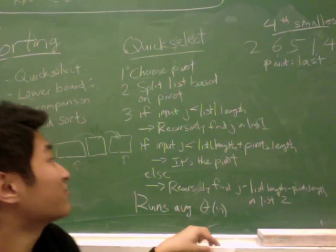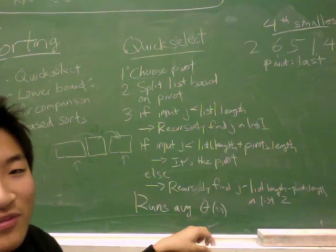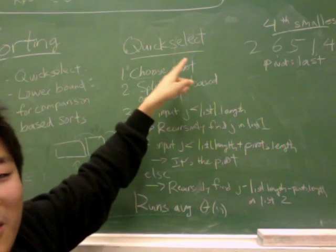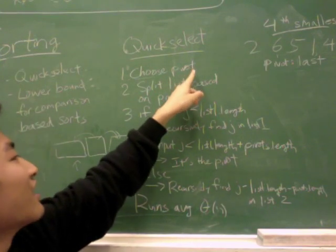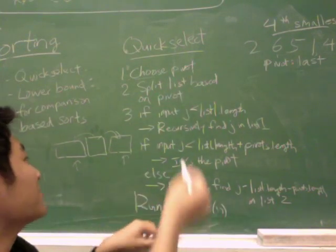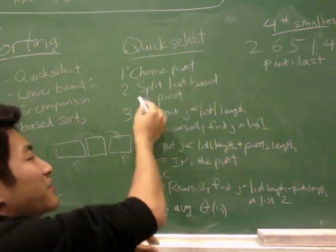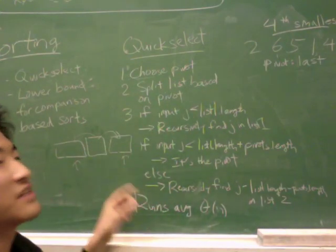QuickSelect, the first two steps will be very familiar to you so I'll blitz through them really quickly. I'm going to first choose a pivot, whatever pivot it may be. I usually want it to be random and then you split the list based on the pivot.